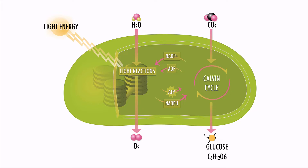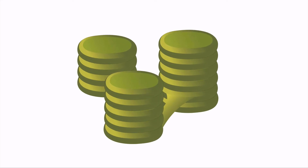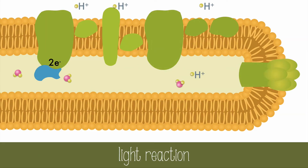Let's take a deeper dive into exactly how these processes really work, starting with the light-dependent reactions, which occur on the thylakoid disks. The membrane of the thylakoid disks have proteins embedded in them which carry out the light reaction. Outside the thylakoid disk is the stroma, and inside is the thylakoid space.